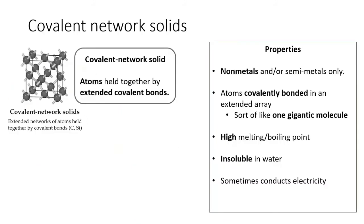The last class of solid is the covalent network solid, which is composed only of non-metal or semi-metals. The atoms are connected in an array of covalent bonds, sort of like if the entire solid was one single molecule. Because the atoms are held together by covalent bonds, they have much higher melting and boiling points than molecular solids. They are also insoluble in water.